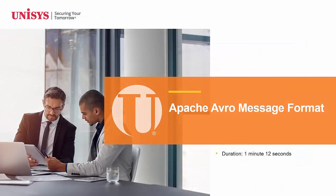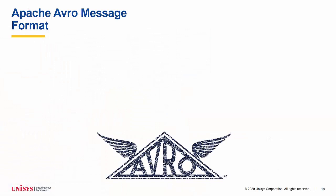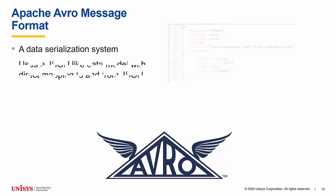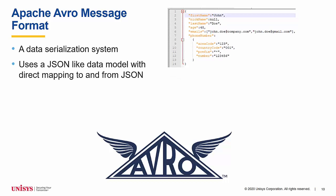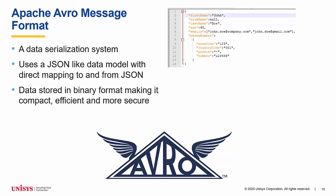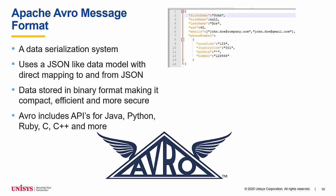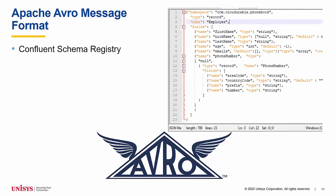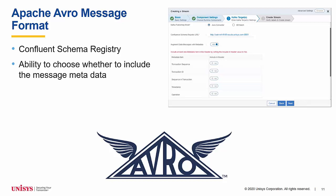Apache Avro message format. Release 6.0 of Data Exchange supports Apache Avro message format. Avro is a data serialization system. Apache Avro messages are written and read in a JSON-like format; however, data is stored in a binary format, making it compact, efficient and more secure. Avro includes APIs for Java, Python, Ruby, C and C++, just to name a few. Data Exchange 6.0 supports Confluent schema registration. Data Exchange will automatically register the relevant schemas for the transformation before sending messages. Users can choose to include message metadata like transaction information, and for non-RDMS source types, before images can also be added to the Avro format message if desired.